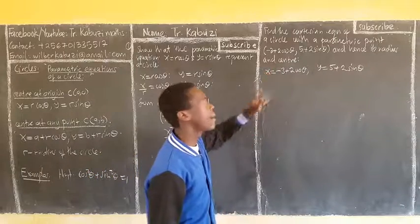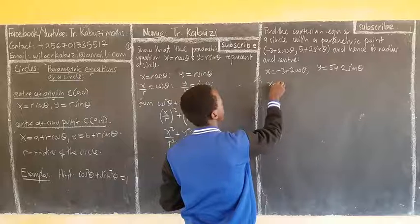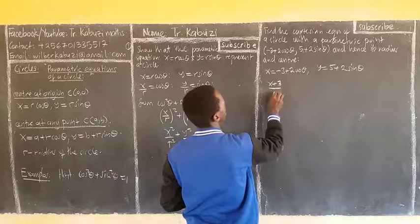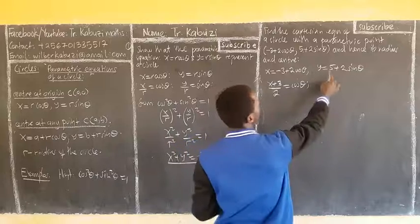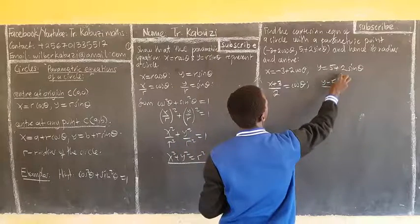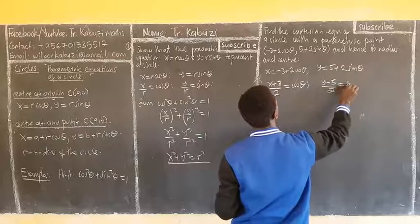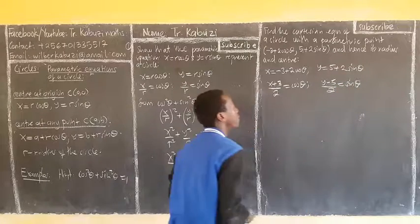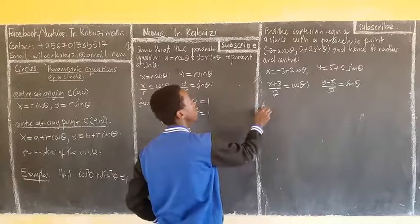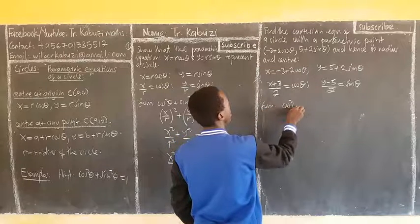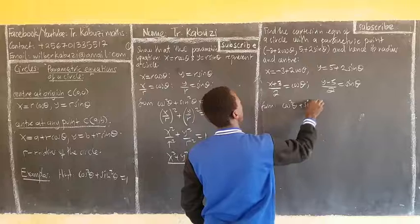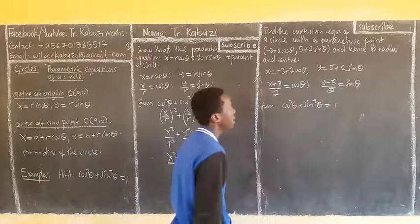When I take these to the side, it becomes x plus 3. I divide by 2 to get cos theta. When I take this side, it becomes y minus 5. I divide by 2 to get sin theta. From there still I say cos squared theta plus sin squared theta equal to 1. I just substitute.